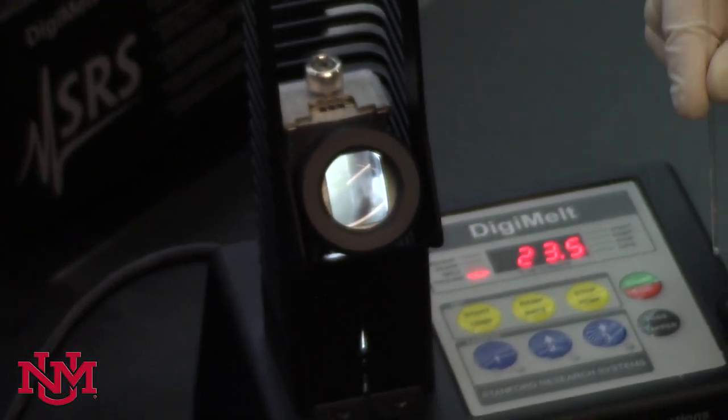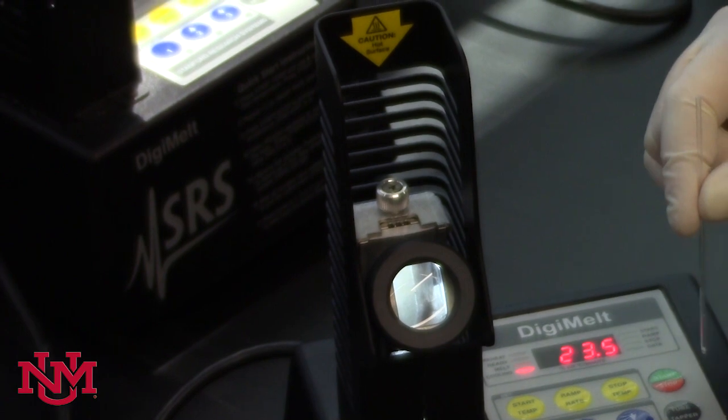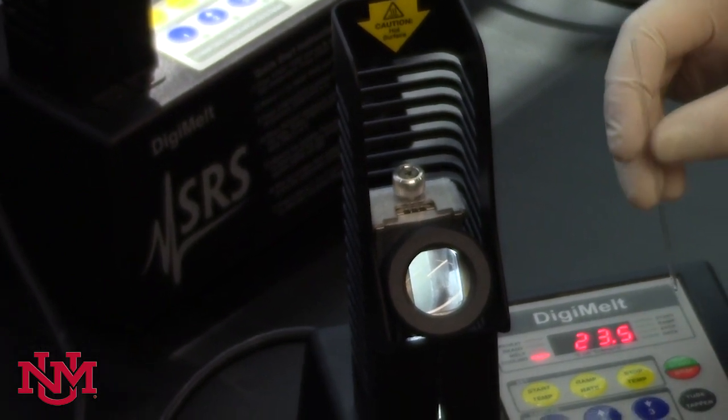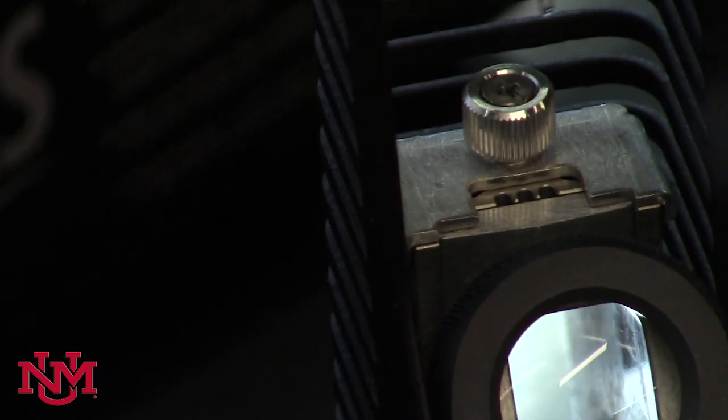Once you have your sample and you've programmed the digi-melt to go ahead and start warming up, then you can come over to the area where we have three little slots and you can put your capillary in there.